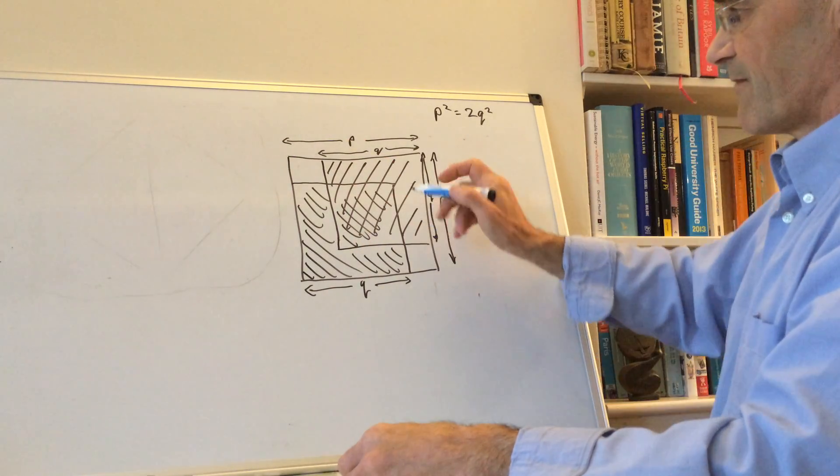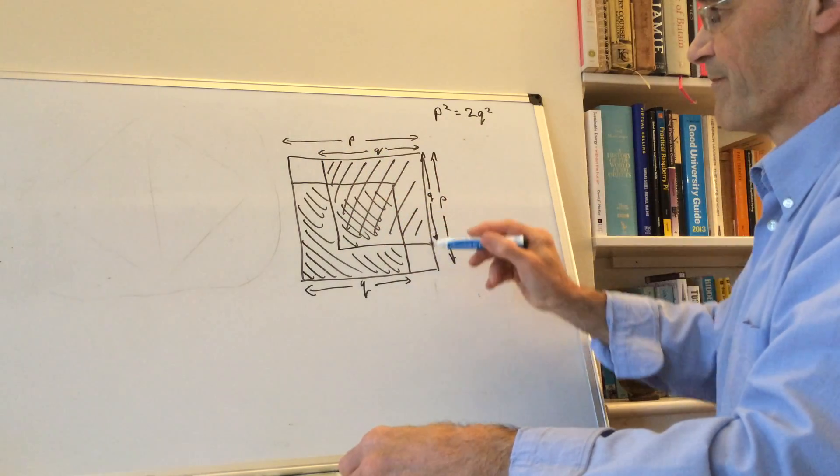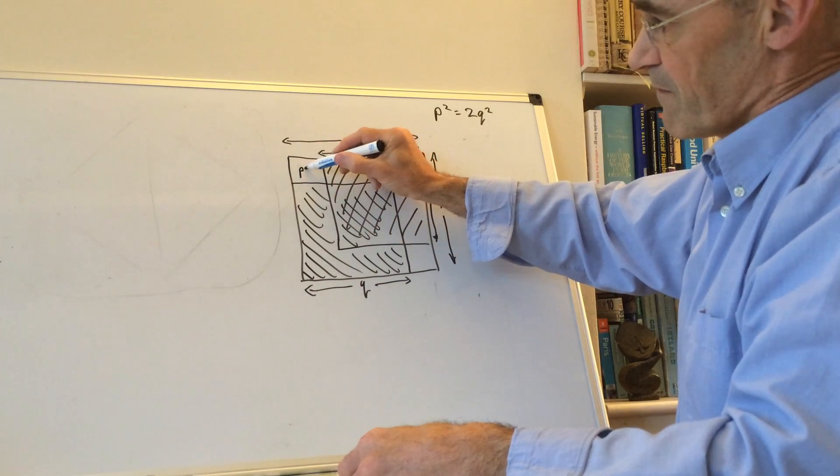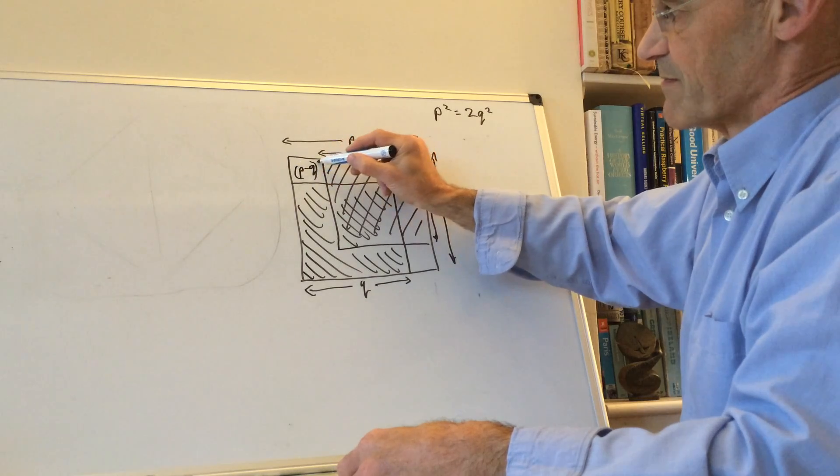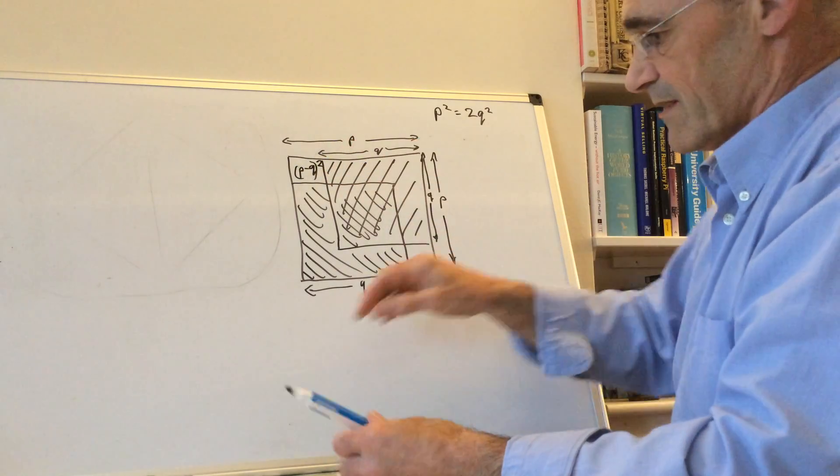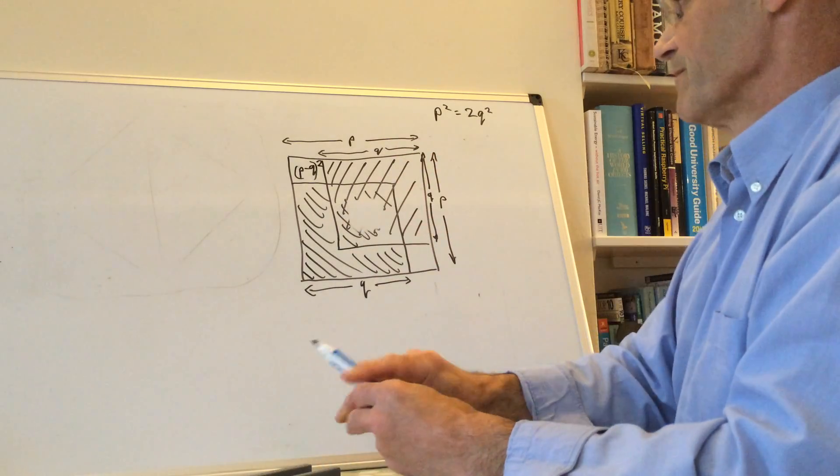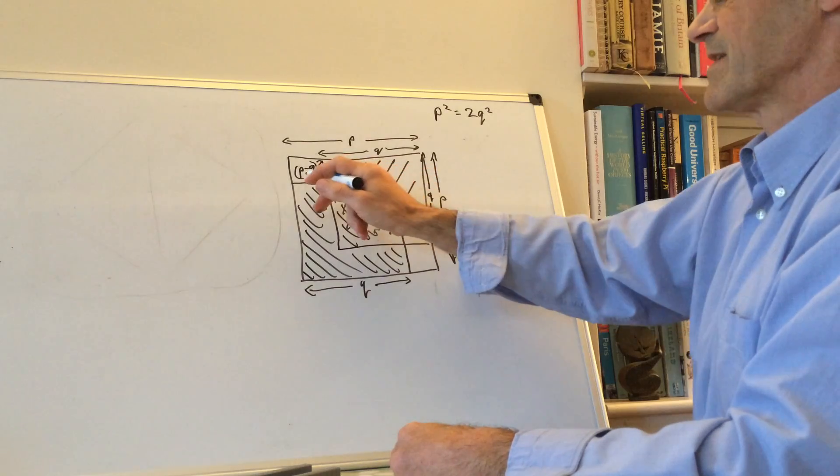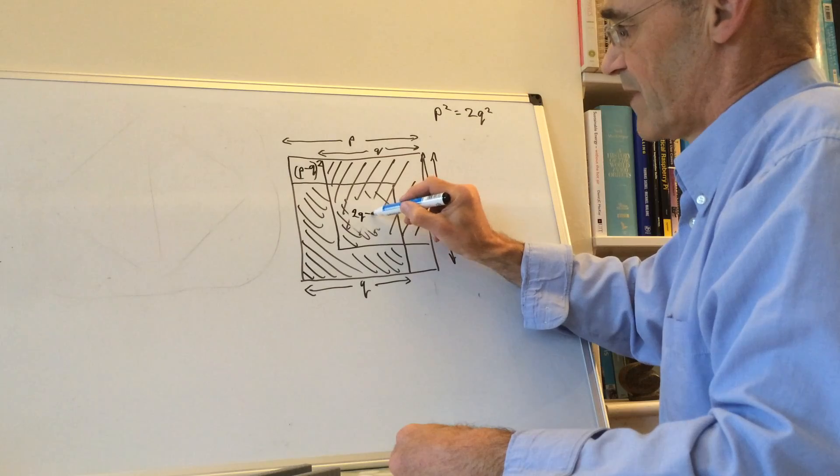Okay, so what are the sizes of these three squares on the diagonal? Well, this is p minus q, its side is p minus q and its area is (p-q)². This one here, well if this is q and this is p minus q, then this must be 2q minus p.